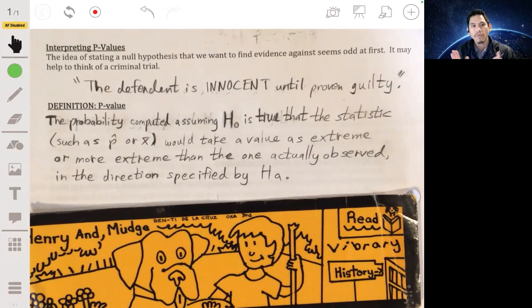Alright, so we're going to continue building off of the example that I used with players shooting the free throws and his coach being suspicious about his free throw percentage really being 80%. We're going to talk a little bit more about what p-values are.